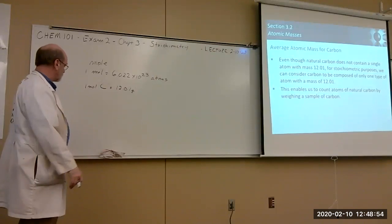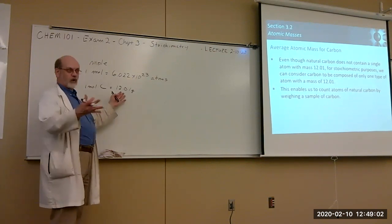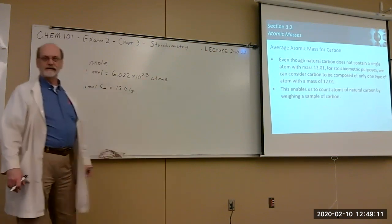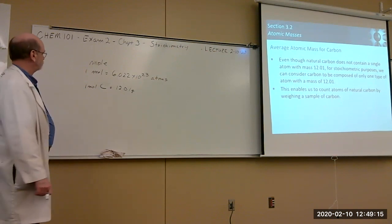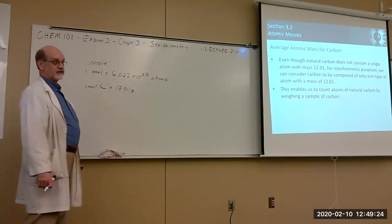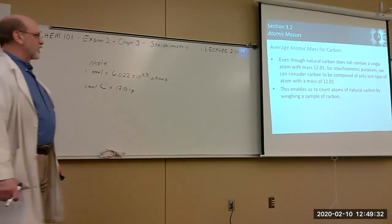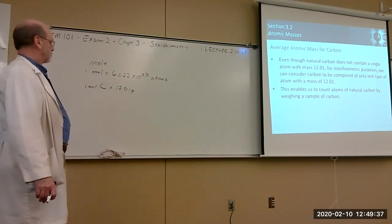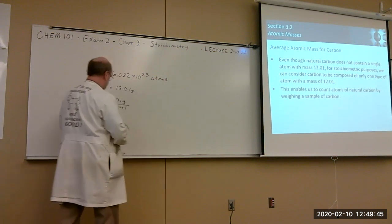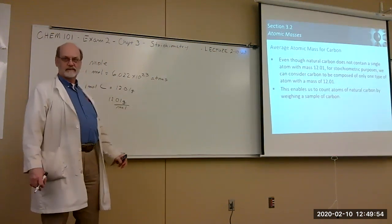For carbon, one mole of carbon equals 12.01 grams of naturally occurring carbon. Since you have an equivalence, you now have a conversion factor: if you know how many grams of carbon you've weighed, you can convert it to moles. And if you need actual numbers of atoms, you can convert to numbers of atoms — but that conversion factor is really weird: it's 6 times 10 to the 23rd. That's a huge number.